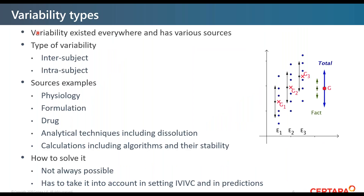What is variability? Variability exists everywhere and has various sources. You have different types: between-subject, which is called inter-subject, and intra-subject — meaning variability within yourself. That can be linked with various sources. You can be different from your neighbor because you don't have the same sex, the same age, the same habits, and so on.